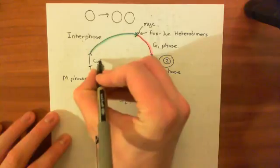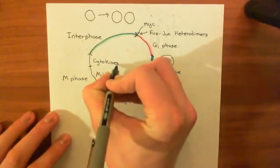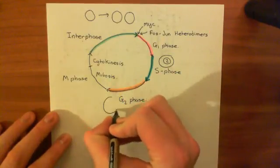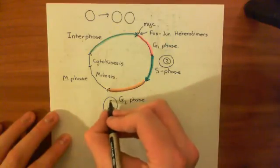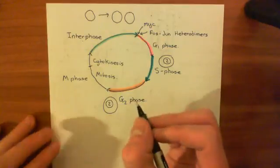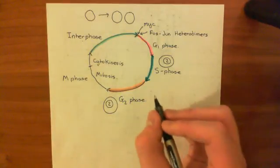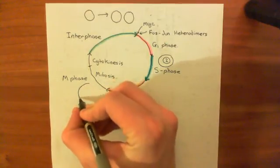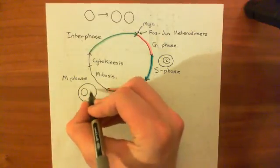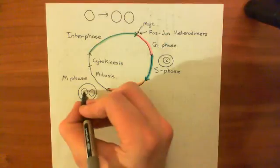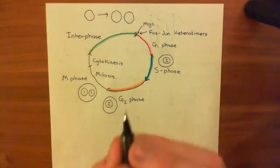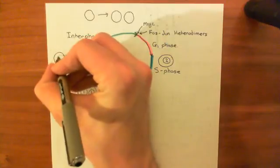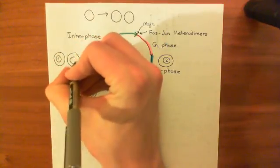Then cytokinesis means the actual division of the cell. At the end of G2 phase, you have one nucleus with two copies of every one of the 46 chromosomes. In mitosis, you divide the nucleus into two — the cell has not divided yet, but the nucleus has, and each nucleus will have one copy of all 46 chromosomes. Then in cytokinesis, you split the cell into two cells, each with one copy of all 46 chromosomes.